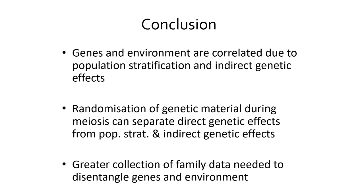In conclusion, genes and environment tend to be correlated, with population stratification and indirect genetic effects contributing to that. Especially for traits with a strong family influence, you would expect indirect genetic effects to generate gene-environment correlation that can only really be separated out by using genetic data on families. When you have genetic data on families, the randomization of genetic material that occurs during meiosis is the key to getting unbiased estimates of direct causal effects of genetic variants, separating them from other sources of genotype-phenotype association. But to do this successfully, we're going to need to collect a lot more genetic data on families.